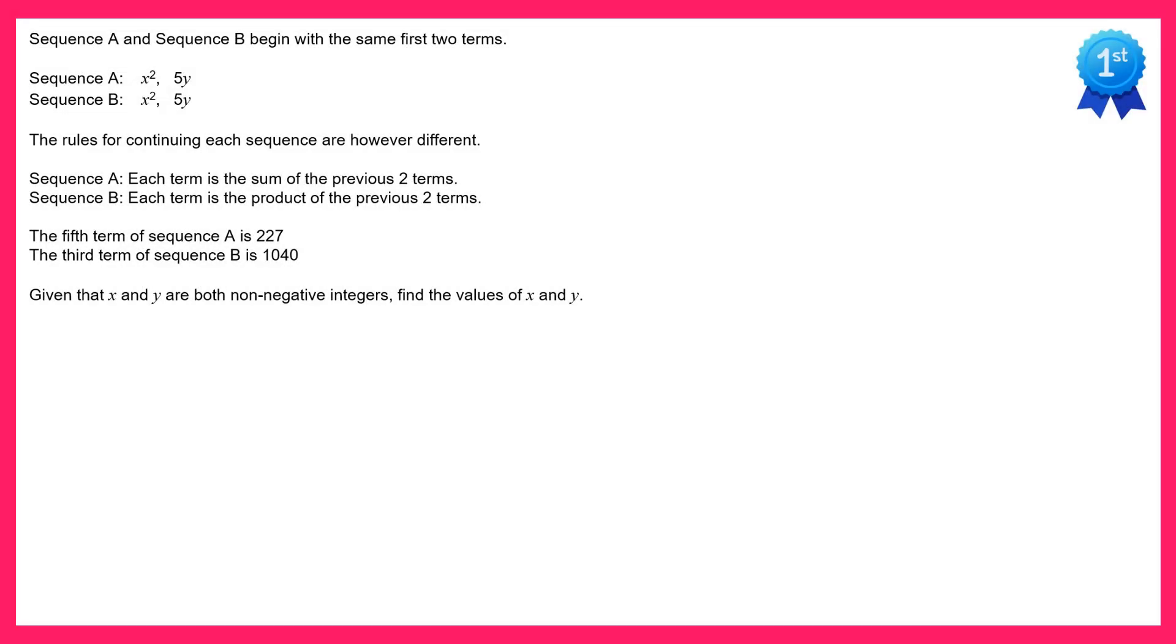Hello and welcome to the solution video for spicy question number 28. In this question we have two sequences and they both start the same with x squared and 5y. We're given some rules for the sequences, so for sequence A we add together the previous two terms and for sequence B we multiply together the previous two terms.